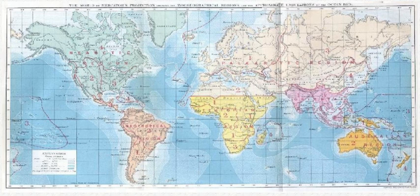Knowledge of spatial variation in the numbers and types of organisms is as vital to us today as it was to our early human ancestors, as we adapt to heterogeneous but geographically predictable environments. Biogeography is an integrative field of inquiry that unites concepts and information from ecology, evolutionary biology, geology, and physical geography. Modern biogeographic research combines information and ideas from many fields, from physiological and ecological constraints on organismal dispersal to geological and climatological phenomena operating at global spatial scales and evolutionary time frames.